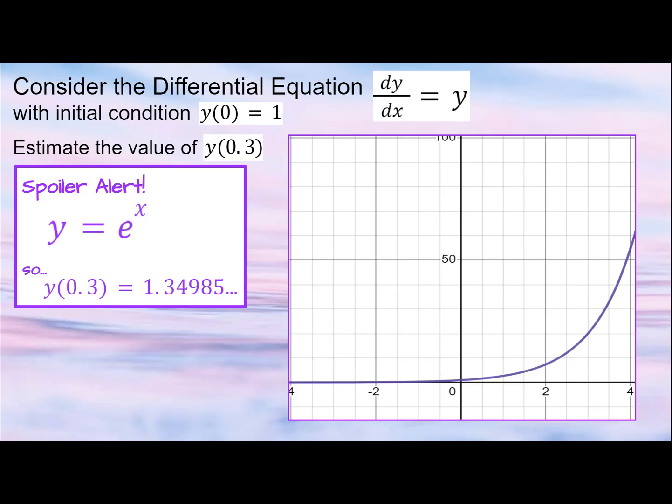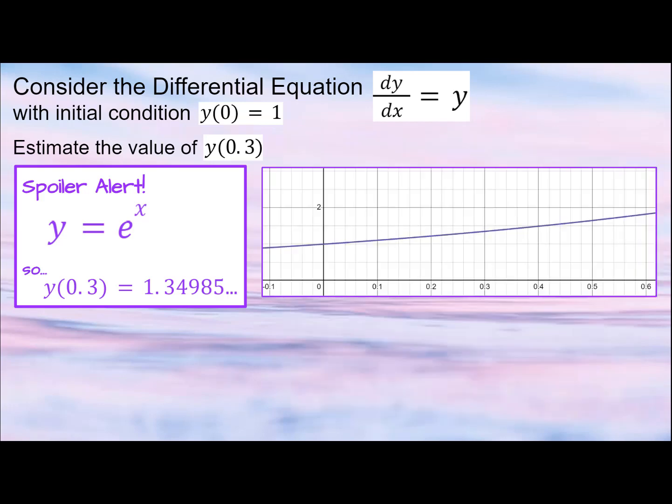In AP Calculus AB, we used local linearization to estimate y values. What would happen if we did that here? Let's go ahead and zoom in. Using local linearization, we would find the equation of the tangent line at the initial condition (0, 1). The slope at (0, 1) is 1, the y value.